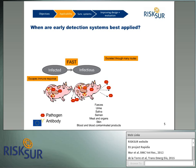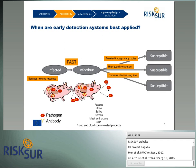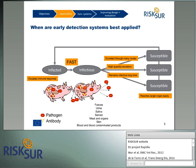What also makes a disease very contagious is that it can be excreted through many routes — for example, through faeces, urine, saliva, semen, meat and organs, skin, and blood and blood-contaminated products. The excretion could be in high quantity, making it more contagious, and can remain effective for a very long time. Also, a very contagious disease reaches the target organ where it multiplies in the susceptible animal very easily, restarting the cycle. Early detection systems are best applied to — and particularly suited for — diseases that have these characteristics.